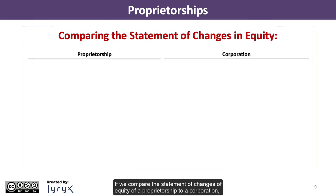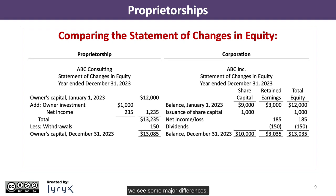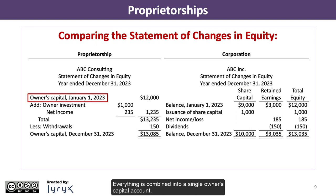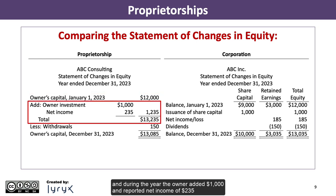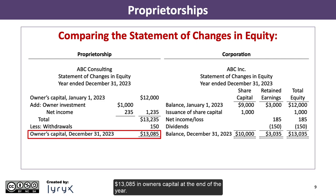If we compare the statement of changes in equity of a proprietorship to a corporation, we see some major differences. There are no share capital or retained earnings columns — everything is combined into a single owner's capital account. The owner's capital at the beginning of 2023 is $12,000, and during the year the owner added $1,000 and reported net income of $235, resulting in a subtotal of owner's capital of $13,235.